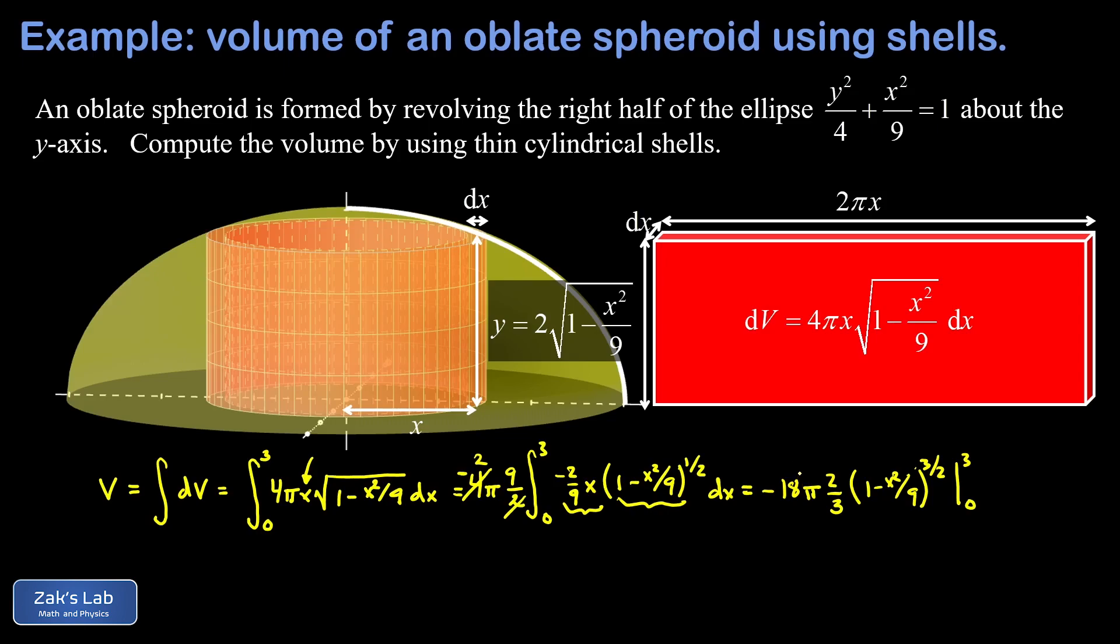Now we can clean things up a little bit out in front, canceling a factor of 3, and that leaves us with a negative 12 pi out in front. Then we look at what happens when we evaluate across the limits of integration. If I sub in x equals 3 in this expression, it gives me a 1 minus 1 which is 0, so that piece is gone. Then we need to subtract what we get when we sub in x equals 0.